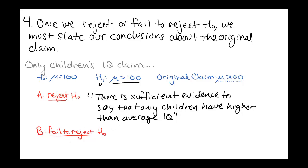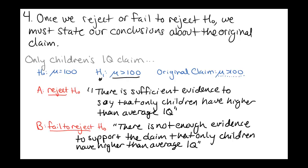On the other hand, if we fail to reject the null hypothesis, we're not really sure — maybe it's true — and that means we don't have enough evidence to support our claim. So we'd say there is not enough evidence to support the claim that only children have higher than average IQ. Whether we reject or fail to reject depends on the data. We can either say there is enough evidence to support the claim, or there is not enough evidence. That doesn't mean the claim is false — it's just that we can't say for sure.